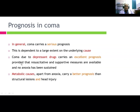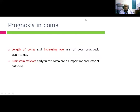Prognosis of coma: in general, coma carries a serious prognosis, dependent largely on the underlying cause. Coma due to depressant drugs carries an excellent prognosis, provided resuscitative measures are available and no anoxia has been sustained. Metabolic causes apart from anoxia carry a better prognosis than structural lesions. Length of coma and increasing age are poor prognostic factors. Brainstem reflexes absent in coma are important predictors of outcome.